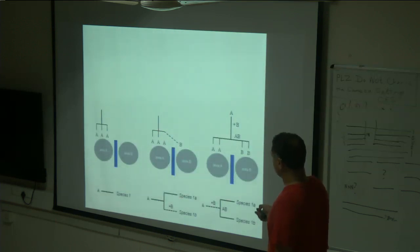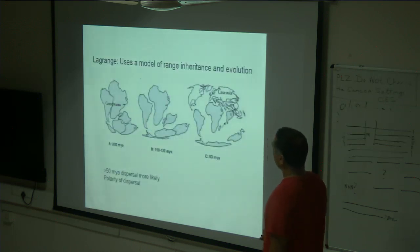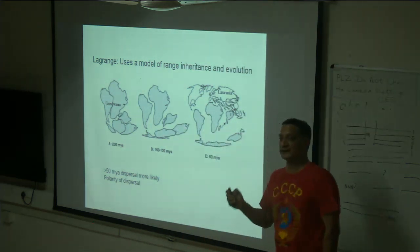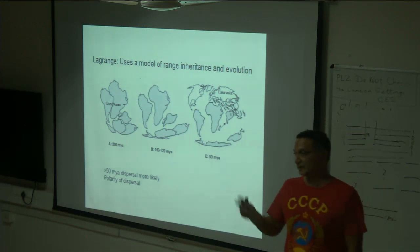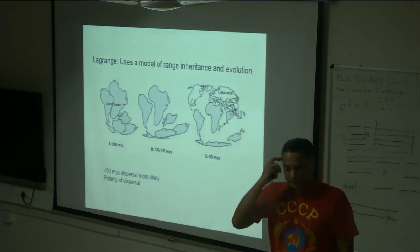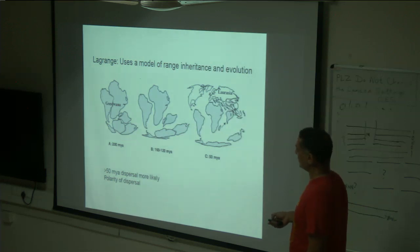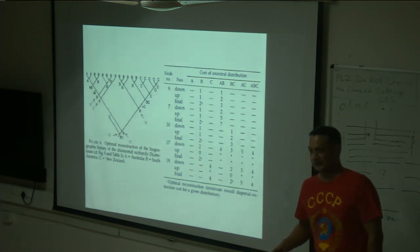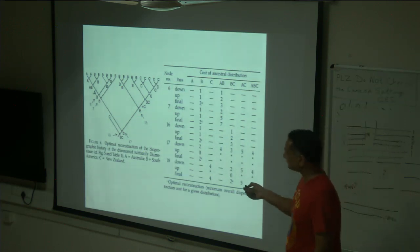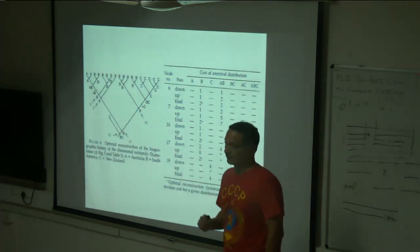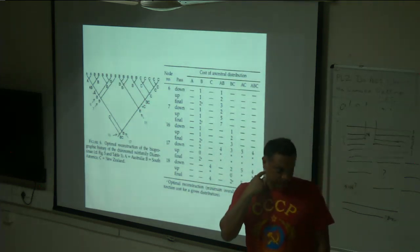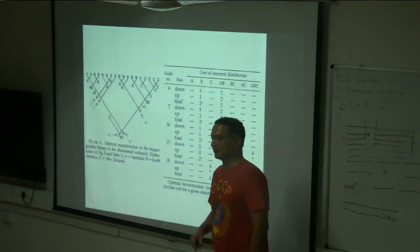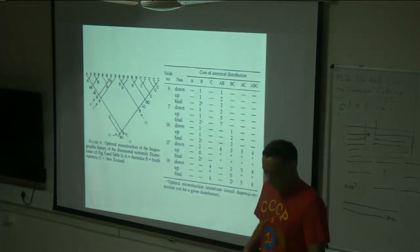Lagrange has something called jump dispersal. The model Lagrange uses is called the DEC model — Dispersal, Extinction, Cladogenesis. That's about a brief introduction of biogeography and historical biogeography. Any questions?